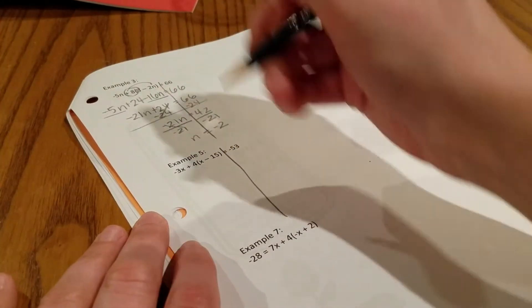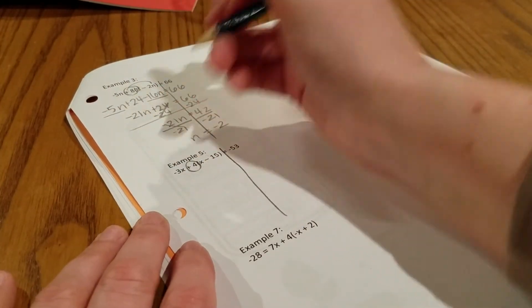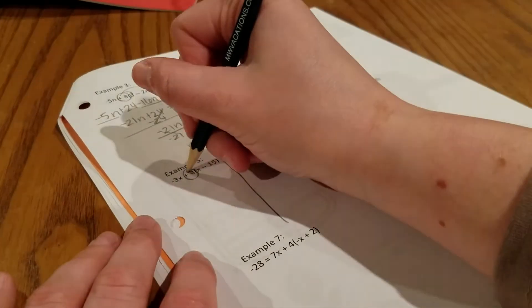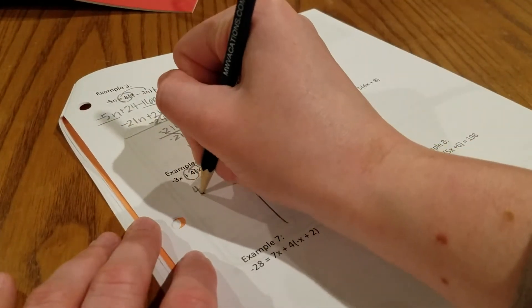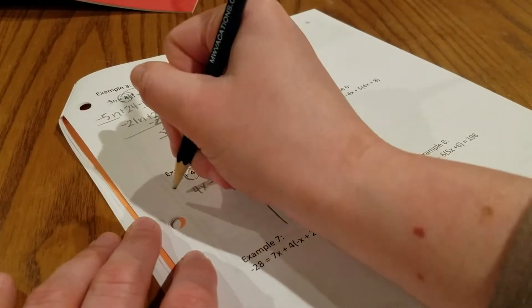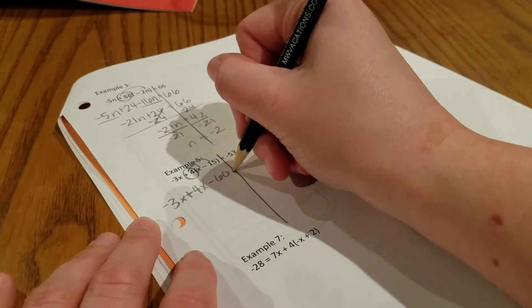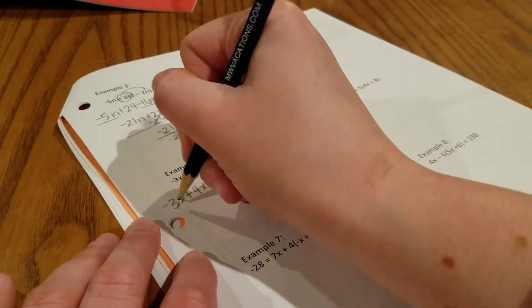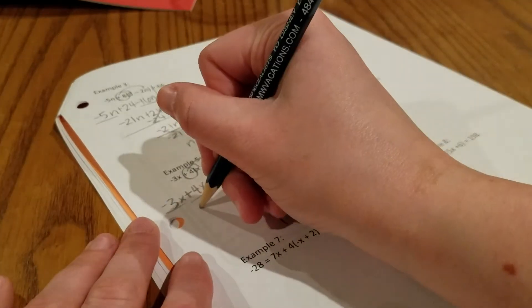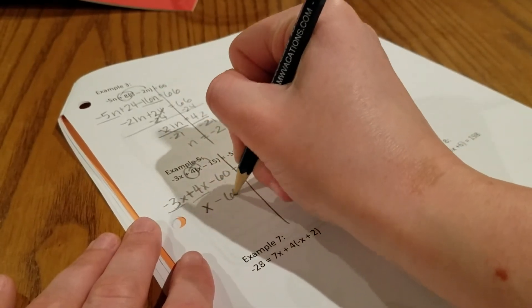Example 5, drop a line down. Positive 4 gets distributed here. So 4x minus 60. Bring down the negative 3x just chilling. Equals negative 53. X's go together. That just gives you positive x minus 60 equals negative 53.